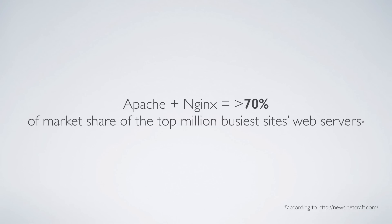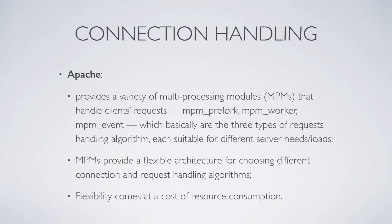While Apache and Nginx share many qualities, they are different in some areas and each excels in its own way and has its own usage scenarios. Perhaps the biggest difference between Apache and Nginx is the actual way they handle connections and traffic and respond to different traffic conditions.